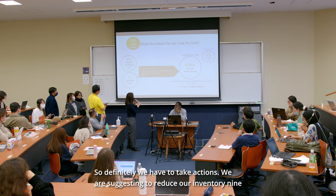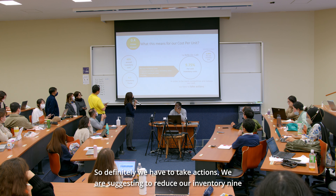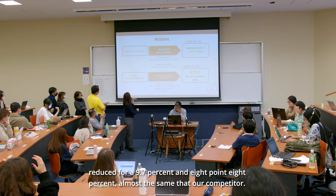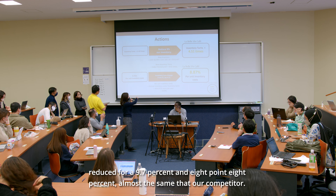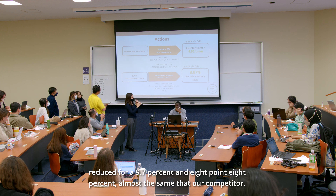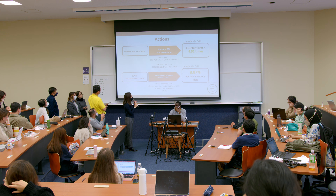So definitely we have to take actions. We are suggesting to reduce our inventory by 9%. This would reduce our per unit inventory cost from 9.7% to 8.8%, almost the same as our competitor.